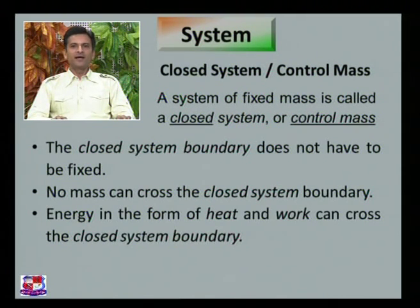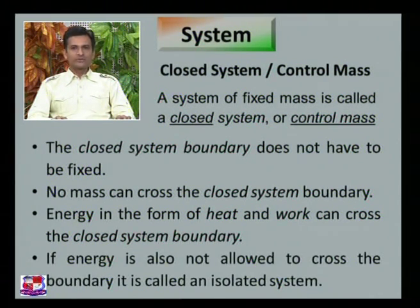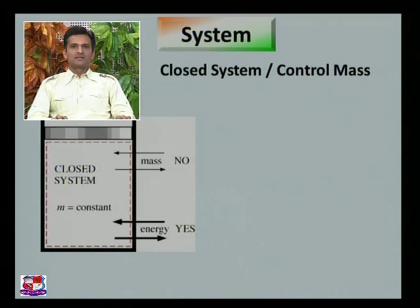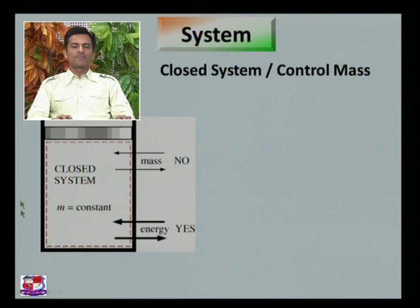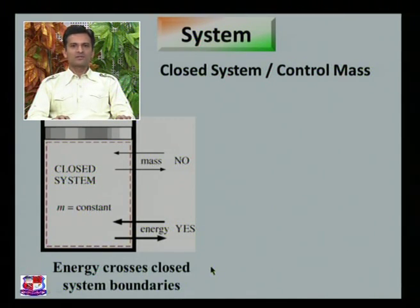Energy in the form of heat and work can cross the closed system boundary. If energy is also not allowed to cross the boundary, it is called an isolated system. In this example of a closed system or control mass, mass transfer is not allowed but energy can cross the boundary. For example, in a pressure cooker, if steam is not allowed to go outside, it is called a closed system.